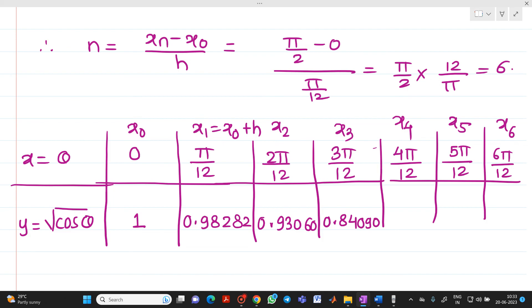When you put it as 4π/12, you will get answer as 0.70711. Now when you put θ equal to 5π/12, you will get answer as 0.50874.